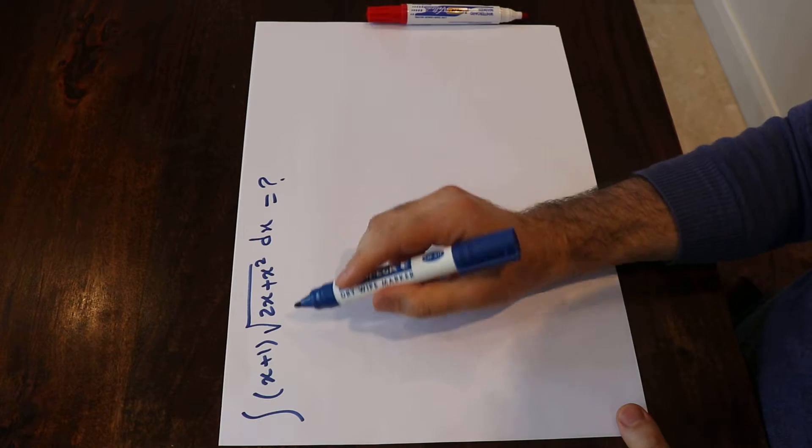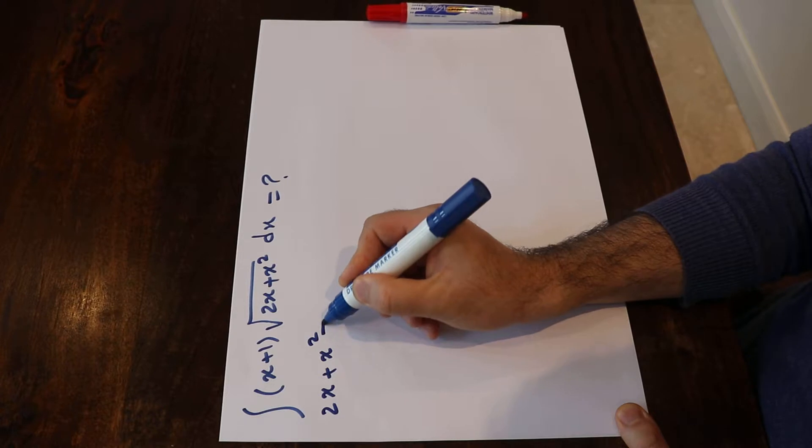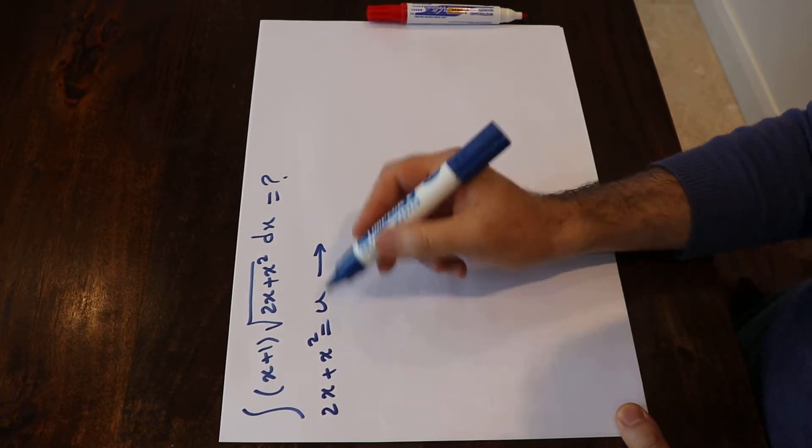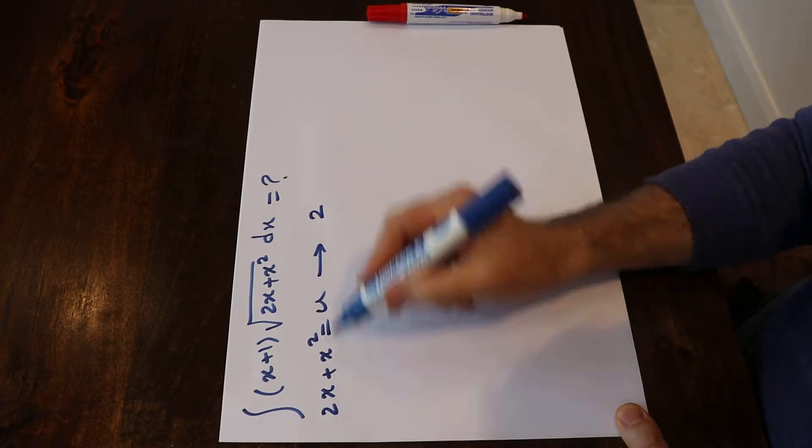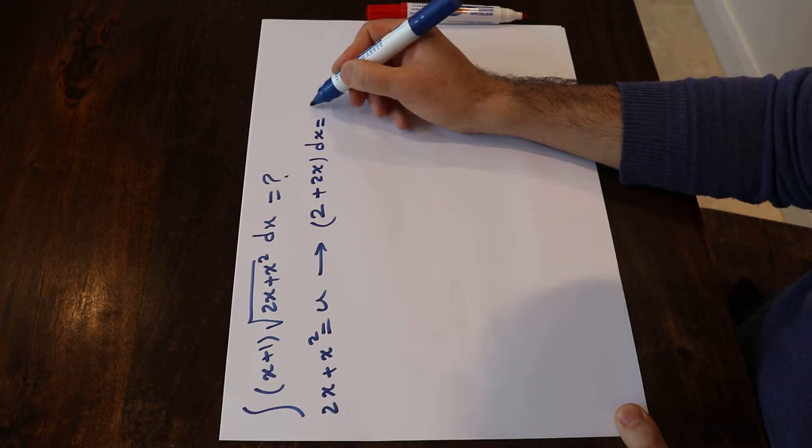To solve this integral, you have to use the substitution rule. If you define 2x+x² as u, and if you take the derivative from each side of this equation, you get (2+2x)dx equals du.